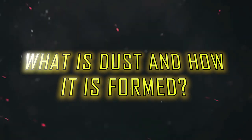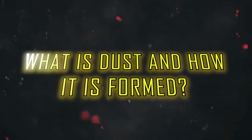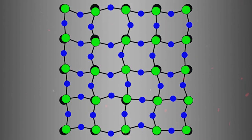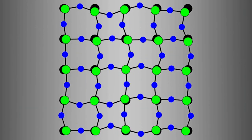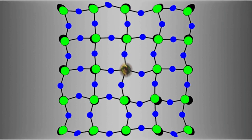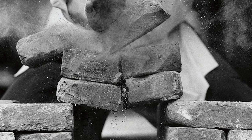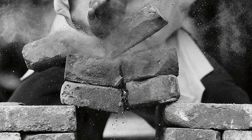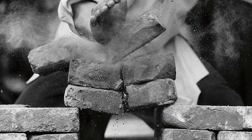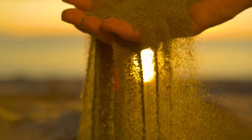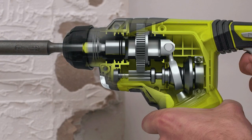Before we go through the uses of dust, it is essential to know what dust is and how it is formed. Every solid substance is composed of very small particles. When these small particles of matter are scattered, they become dust particles. For example, if we break a brick or a stone into small pieces, it will turn into small particles of dust.